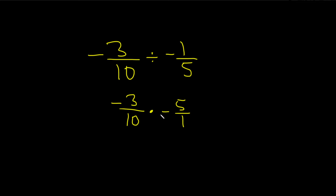And now we're looking for cancellation. Numbers on the top are allowed to cancel with numbers on the bottom. The 5 and the 10 — that'll work. 5 goes into 5 one time, so I'll cross this out and put a 1. And 5 goes into 10 two times, so I'll cross this out and put a 2.